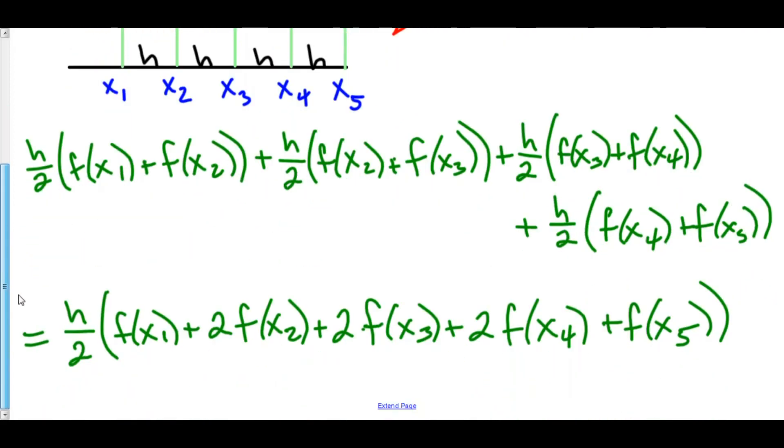Once again, this is the formula for trapezoidal rule, where here we had four different partitions. However, you could have as many partitions as you actually need.